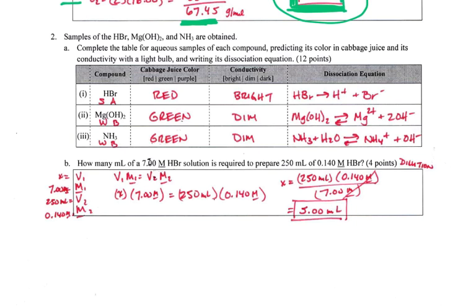HBr, we should recognize that's a strong acid. The Mg(OH)2, that was magnesium hydroxide, that was milk of magnesia, weak base, and ammonia is a weak base. So cabbage colors, we know that red is an acid, so this guy must be an acid. The blues and the greens, those are bases, so both of those are bases. Now that strong acid is going to be a strong electrolyte, it's going to be very bright. And we know the magnesium hydroxide and the ammonia were both very dim, especially the magnesium hydroxide is very dim.